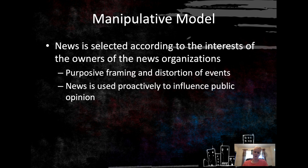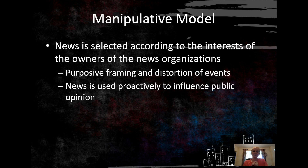We also have the manipulative model, where news is selected according to the interest of the owners of the news organization. This is where we get ideas of politically-leaning news organizations being further left, right, or centrist, guided by the editor-in-chief or owner. The whole thing is purposive framing and distortion of events — sometimes you get whole papers like the National Enquirer created out of sensation and gossip. Essentially news is proactively used to influence public opinion. Not many people see as much legitimacy and accuracy in the manipulative model, but it is out there and it is consumed.